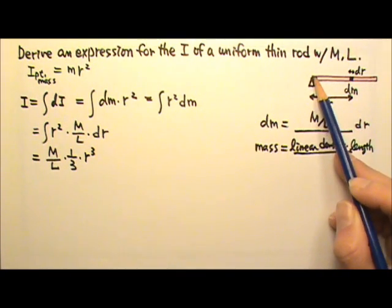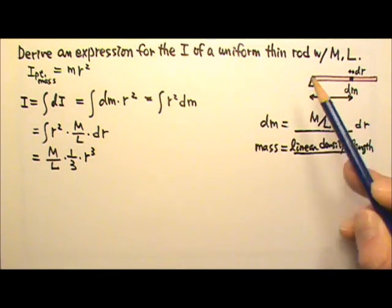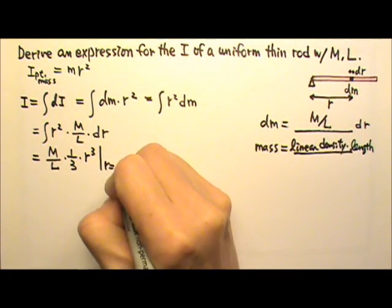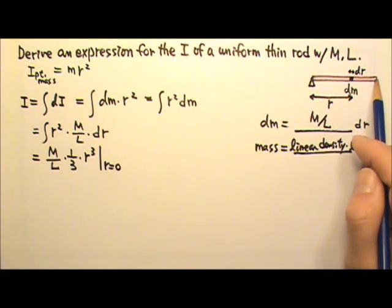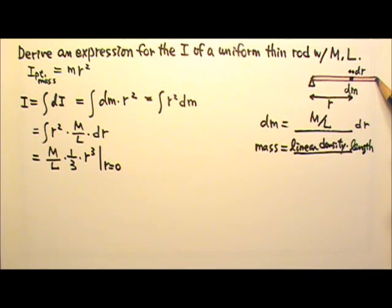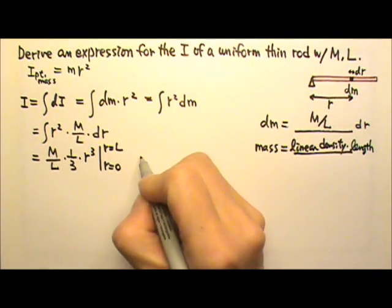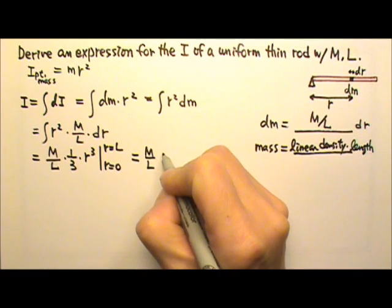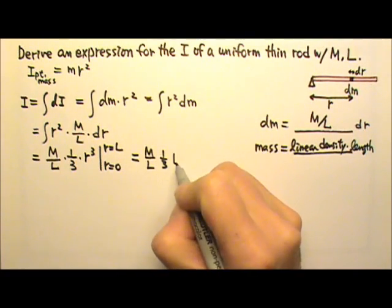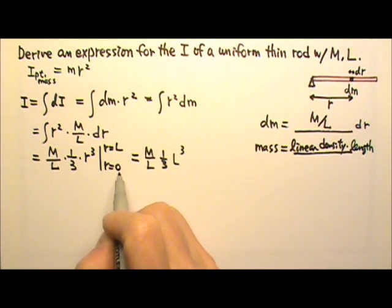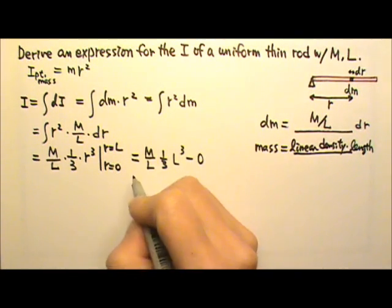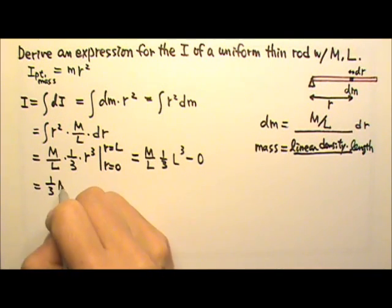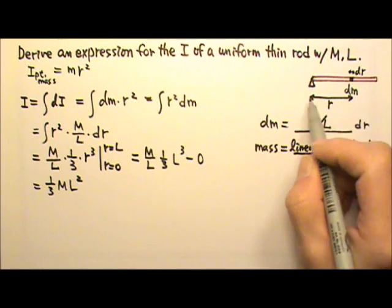So we can start from here, this end, and go all the way to the other end. When the dm is at this end, what is the r? R is 0. And then we go to the other end of the rod. That little bit of dm would have a r equals to L. So we integrate all the way to r equals to L. And then, of course, we just have to plug in the upper limit, M over L, 1 third L cubed, minus what we get when we plug in the lower limit, which is 0. So if we simplify this, we will get 1 third ML squared. And that is the rotational inertia for this rod.